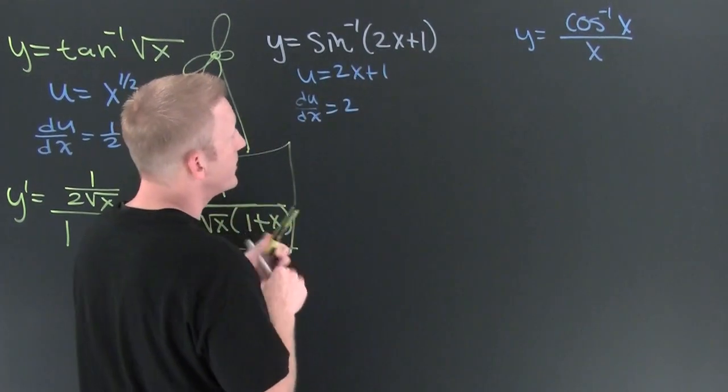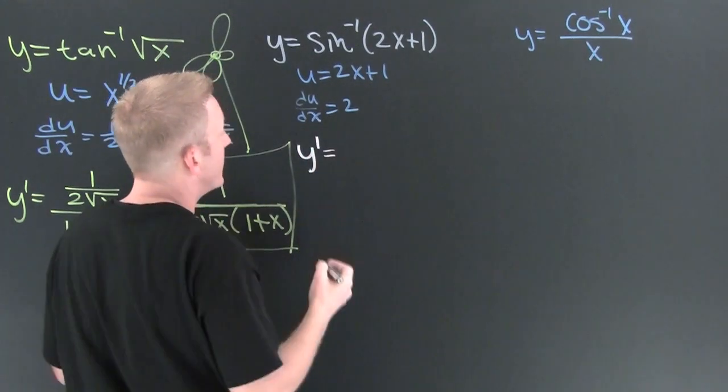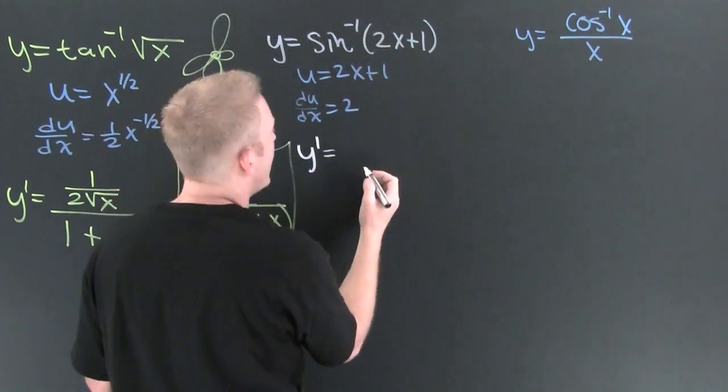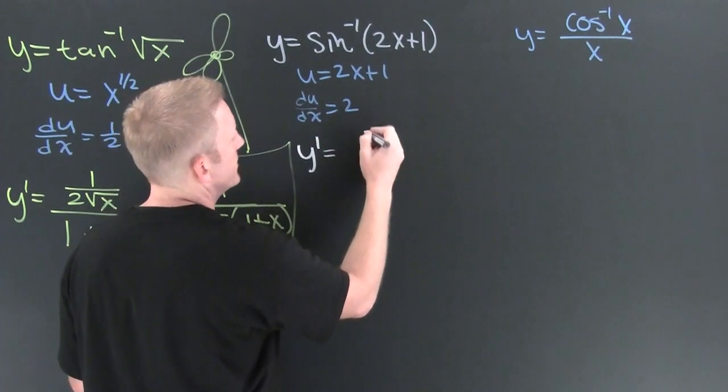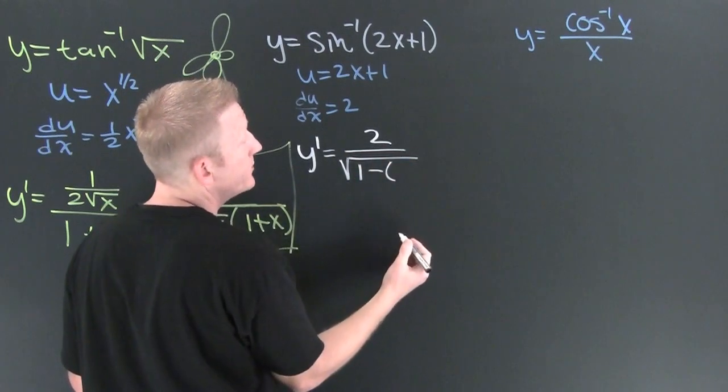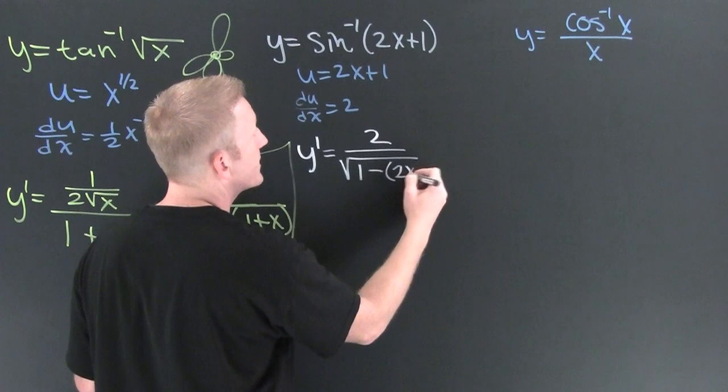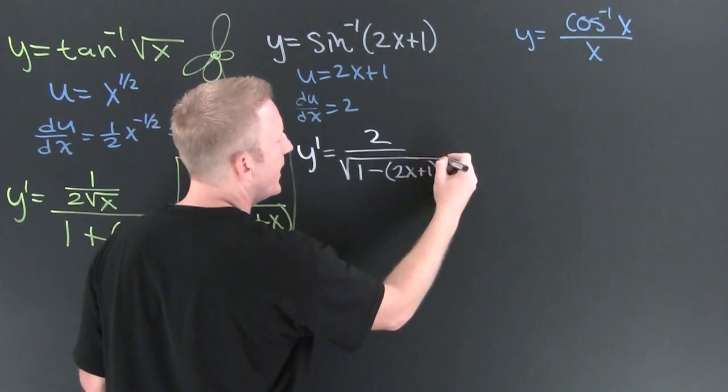So then, if I am looking for y prime. Mm-hmm. Yeah, maybe I'm a Decepticon. No, okay, fine, back to the math. It's gonna be du/dx. Or, 2 over the square root of 1 minus my u squared. 2x. Ha-ha. Cute. Plus 1. Very nice.